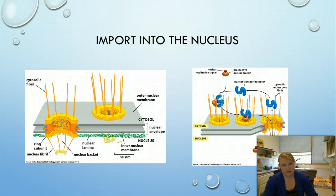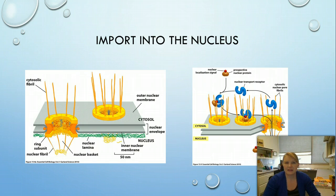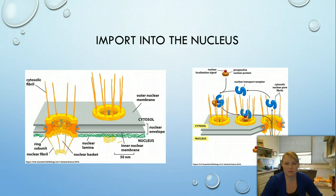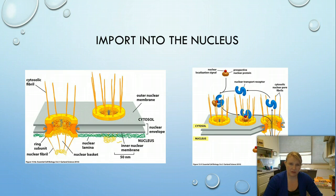Let's start with importing into the nucleus. We've talked about nuclear pores before when discussing how mRNA leaves the nucleus. The nucleus needs proteins — especially those used in replication, transcription, and translation — and these are made in the cytosol and must be imported. There's a nuclear localization signal on the protein that binds to a nuclear transport receptor, which guides the protein through the complex web of material making up the nuclear pore — a structure built from about 30 proteins. Once through the pore, the receptor disassociates and the protein performs its function.